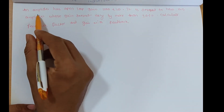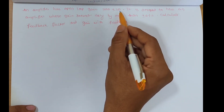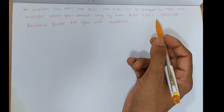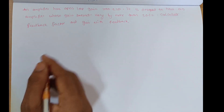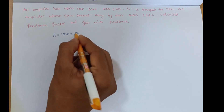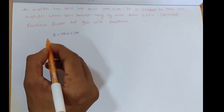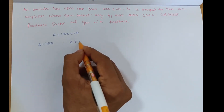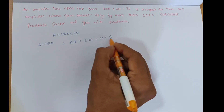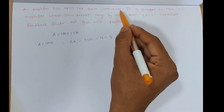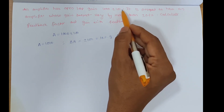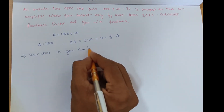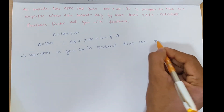Next problem: An amplifier has open loop gain of 1000 ± 100. It is designed to have an amplifier whose gain does not vary by more than ±0.1%. Calculate the feedback factor and gain with feedback. Here A = 1000, and the change in open loop gain ΔA = ±100, which is 10% of A. By using negative feedback, variation in gain can be reduced from 10% to 0.1%.